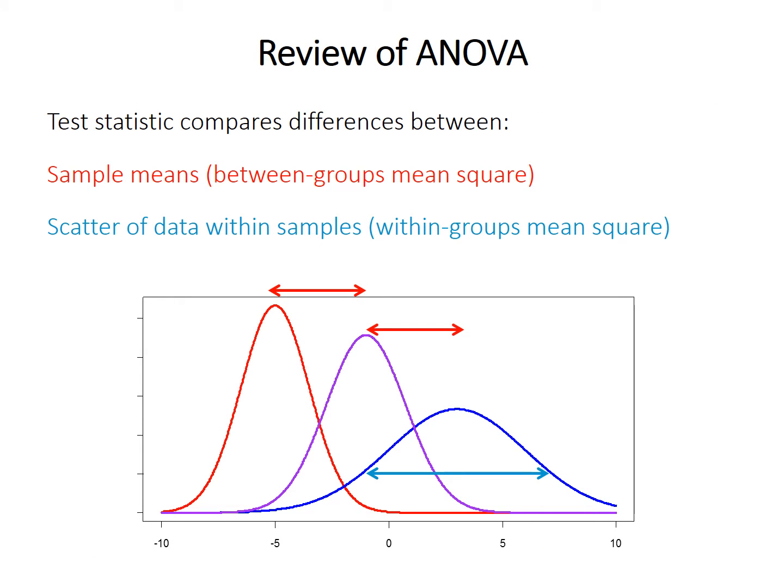There are a lot of conceptual similarities between MANOVA and the univariate ANOVA, so let's quickly recap what ANOVA does. ANOVA assesses the differences between the groups by comparing the between-groups mean square — basically the sample mean relative to the overall grand mean — to the within-groups mean square, which is the scatter of data within each group, so each observation subtracted from the sample mean, sum of squares, and so forth. The test statistic is the ratio of those two values.